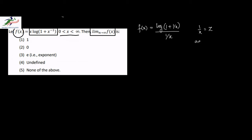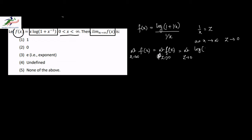We can write 1/x equal to z, so as x tends to infinity, z tends to 0. So the limit of f(x) as x tends to infinity will be equal to the limit as z tends to 0 of log(1 + z) over z. We can see that if we put the value of z equal to 0 in this, then the function becomes of the form 0 by 0, so therefore we have to use L'Hôpital's rule.